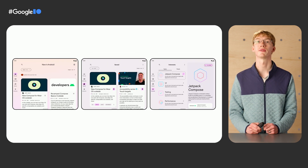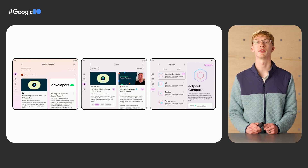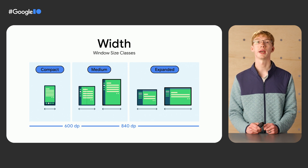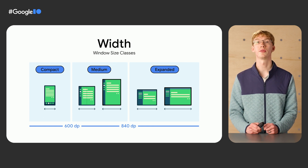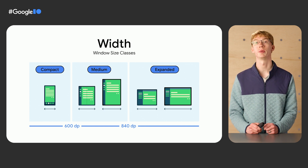Each screen has different sets of designs based on window size classes, which are an opinionated set of breakpoints to account for common classes of devices. Since this app generally has vertical scrolling content, the width window size classes are most important to us. A compact screen width is whenever the screen size is narrower than 600dp, which corresponds to the common case of smartphones in portrait mode. A medium width is a screen width of 600dp up to 840dp, which corresponds to tablets and inner displays of foldables in portrait mode.